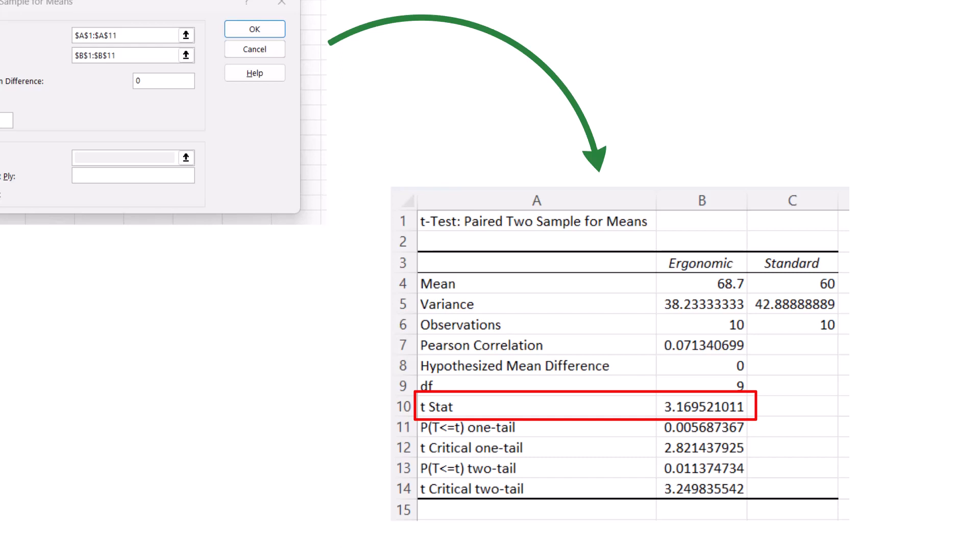For this problem, we know we're working with an upper one-tailed test. So the t-critical value of 2.82 and the p-value one tail of 0.0057 here are the key outputs that we're interested in. This is why it's important to know if you're working with a one or two-tailed test before so you know which values to use.